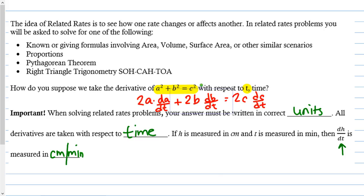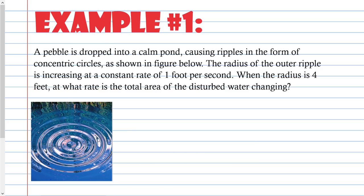One last thing before I move on: these parts are going to be considered the rates. That's why it's called the related rates problem — these rates are all related somehow. In this example I did here to get you to see that it is implicit differentiation, I hope you noticed it's just the Pythagorean theorem. Okay, example one.